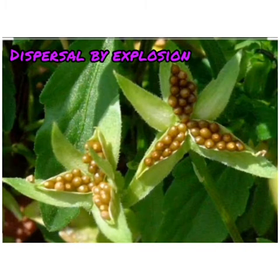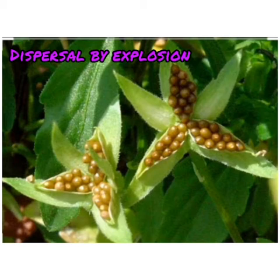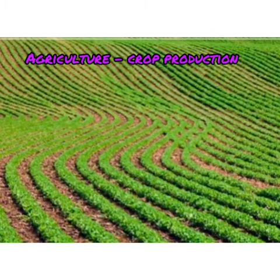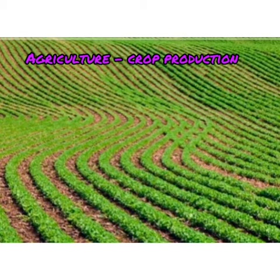Dispersal by explosion: some fruits like lady's fingers, balsam, and peas explode or burst open with great force, scattering the seeds away from the parent plant. Agriculture and crop production: when a plant is grown on a farm in large numbers, it is called a crop. The process of production of crops on a large scale is called agriculture.